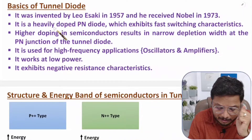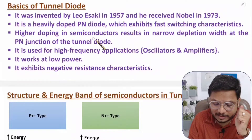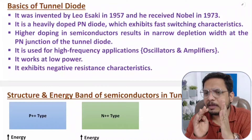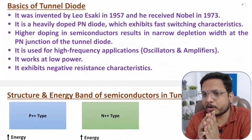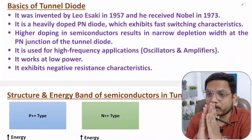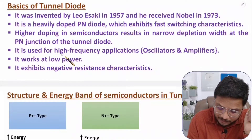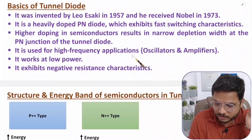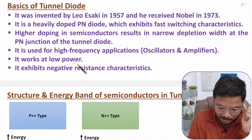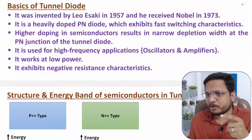Tunnel diode is a heavily doped pn diode which exhibits fast switching characteristics. Due to higher doping concentration in the semiconductor material, we have a narrow depletion width. Tunnel diode provides extreme doping concentration compared to a normal pn junction diode, so depletion width is very narrow. It is used for high frequency applications as an oscillator and amplifier, and it operates at low power while exhibiting negative resistance characteristics.